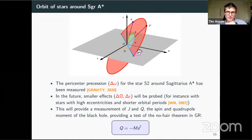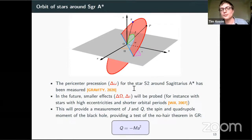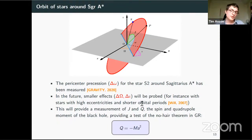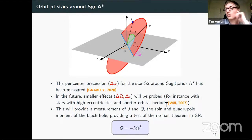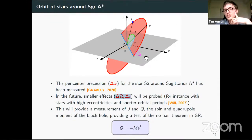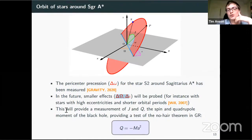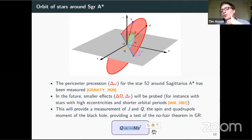The star S2, mentioned in the previous talk, has been observed for more than 25 years, allowing more than one full period to be seen. Hence, they've already calculated the Schwarzschild precession of the star, which is in accordance with GR, and also the gravitational redshift which also agrees with GR. But in the future, when stars with higher eccentricities and shorter orbital periods are measured, or when binary pulsars orbiting close to the black hole are observed, they'll be able to measure smaller effects like nodal angle variation and inclination, which come from a spinning black hole. Very importantly, it will provide a test of the no-hair theorem, which states that the quadrupole moment is uniquely determined by the mass and angular momentum.